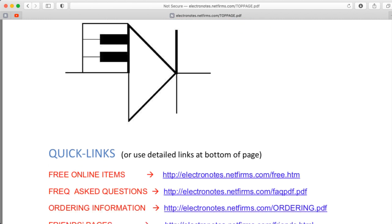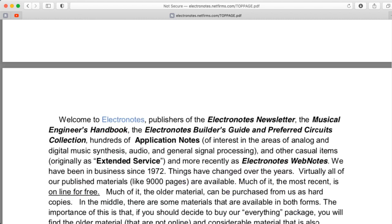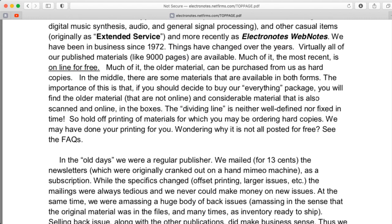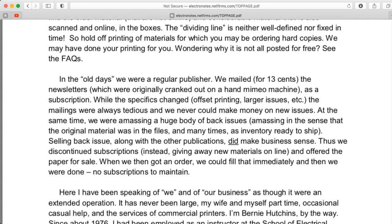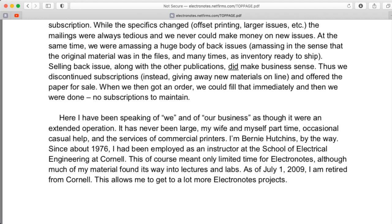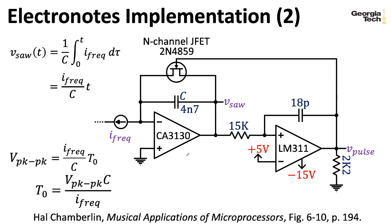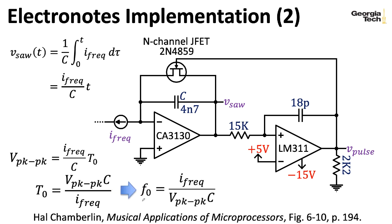You can still, I believe, send Bernie a check and he'll send you a giant multi-foot high stack of loose leaf paper, which I put into three ring binders — that takes up two entire shelves in my Van Leer office. The particular values used in this Electronotes circuit let us see how a particular control current gives you a specific frequency. The period of the waveform equals one over the frequency, and then we rearrange the expression.